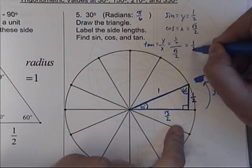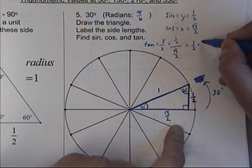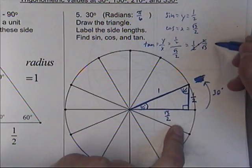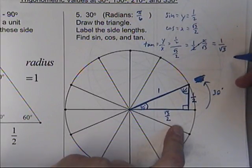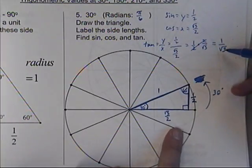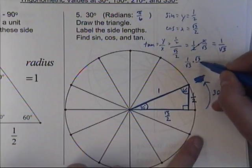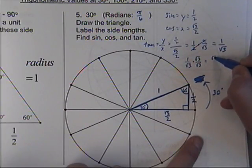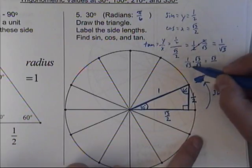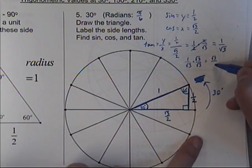I take the top, multiply it by the reciprocal of the denominator. The 2's are going to cancel, which gives me 1 over the square root of 3. I can't leave the square root of 3 in the denominator, so I'm going to multiply on the top and the bottom by the square root of 3, which leaves me the square root of 3 on the top, and the square root of 9 on the bottom, which is just 3.